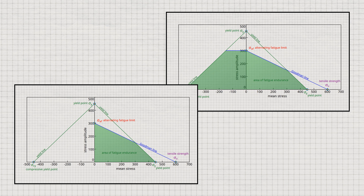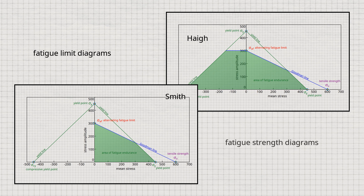The most important diagrams are those introduced by Hay and Smith. If the fatigue limit is taken as the basis in such diagrams, one speaks of fatigue limit diagrams. If, on the other hand, a certain number of load cycles to be endured is used as the basis, one speaks of fatigue strength diagrams.